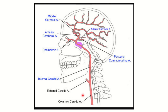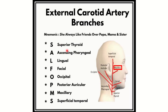Now let's look at the branches of the common carotid artery — specifically the external carotid artery. The mnemonic to remember its branches is: 'She Always Likes Friends Over Papa Mama And Sister.' S for superior thyroid, A for ascending pharyngeal artery, L for lingual artery, F for facial artery, O for occipital artery, P for posterior auricular artery, M for maxillary artery, and S for superficial temporal artery.